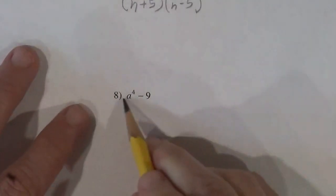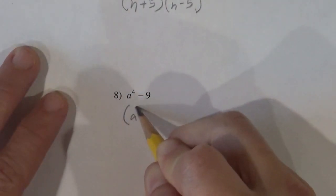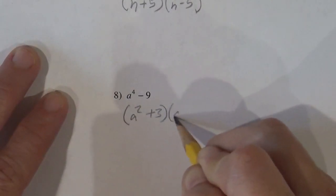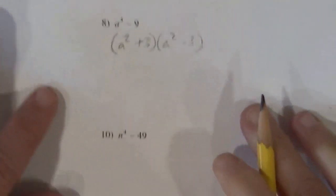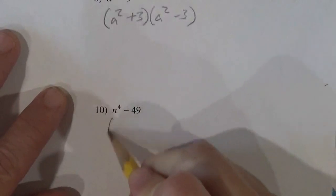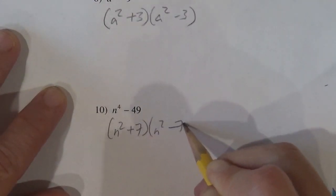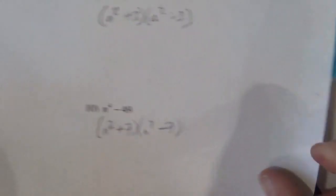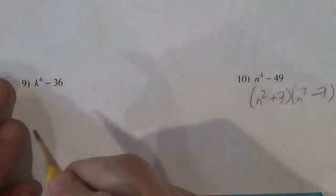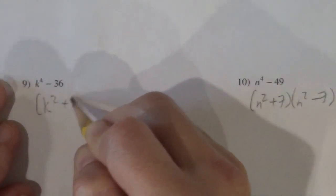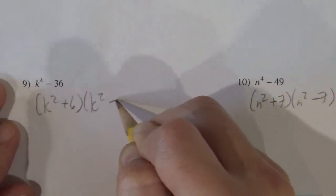Even something like this guy here, that's just a squared plus 3, a squared minus 3. Even something like that guy, that's just n squared plus 7 times n squared minus 7. Even something like that one, just k squared plus 6, k squared minus 6.